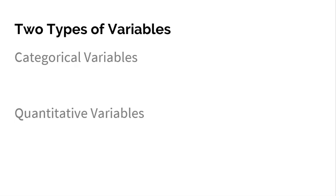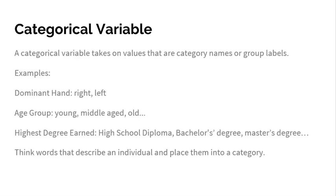There are two types of variables that we're going to learn about and use throughout the entire year. The first is a categorical variable, and the second is a quantitative variable. Understanding the difference between these two variables is vital for a lot of things that we do in the future. First, let's start with a categorical variable.